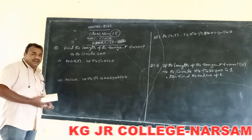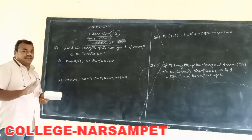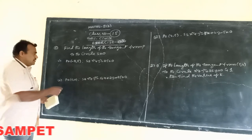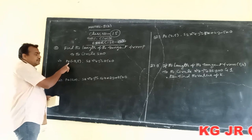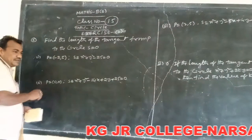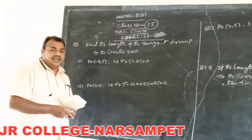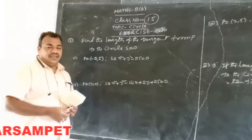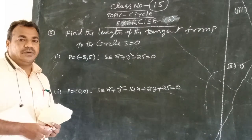Now we have to find out the length of the tangent from the given point to the given circle. The length of the tangent drawn from the point to the circle is given by the formula root S₁₁ for P. Already we know this.